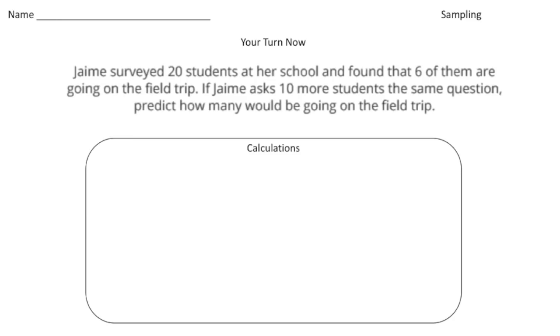Let's say you did this practice problem. So here it says Jamie surveyed 20 students at our school and found that six of them are going on the field trip. If Jamie asked 10 more students the same question, predict how many would be going on the field trip. So our sample is 20 people. And of the 20, six said that they're going on a field trip. So let's write that down. So we know that six were going out of 20 total.